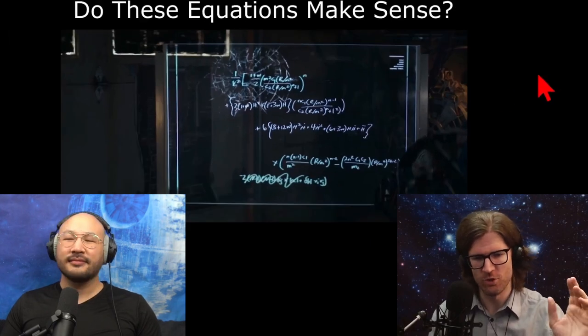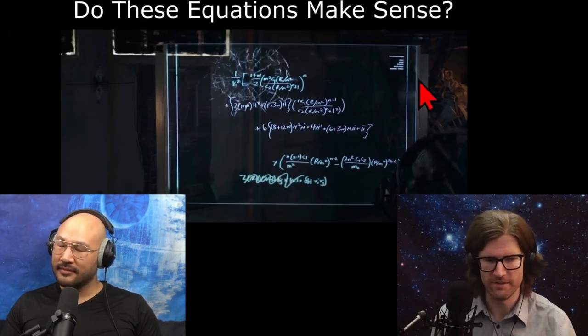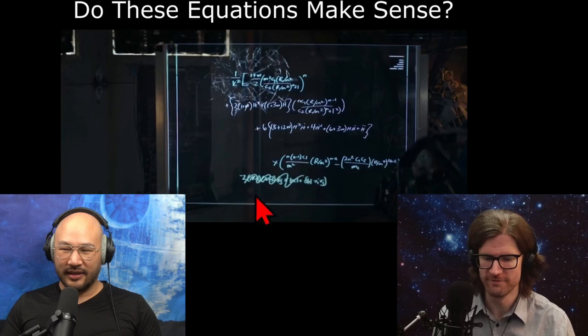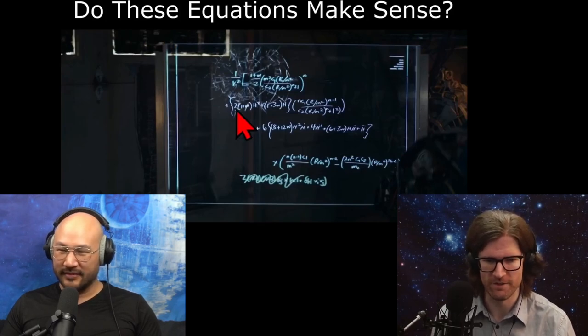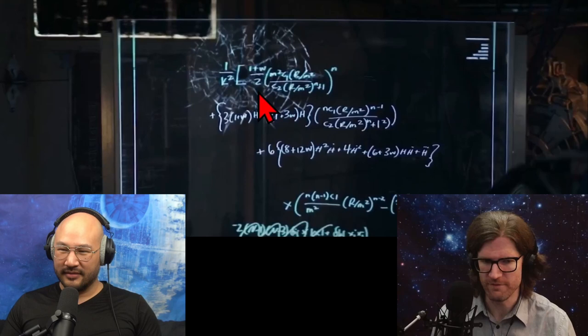We've got two stills here of the equations that are written on Renton's clear board, transparent board, his window, and his whiteboard to the left here. Can we make sense of these equations?